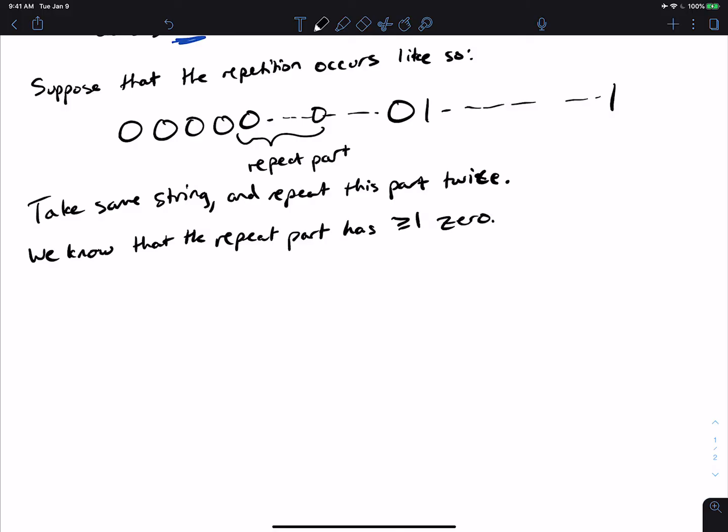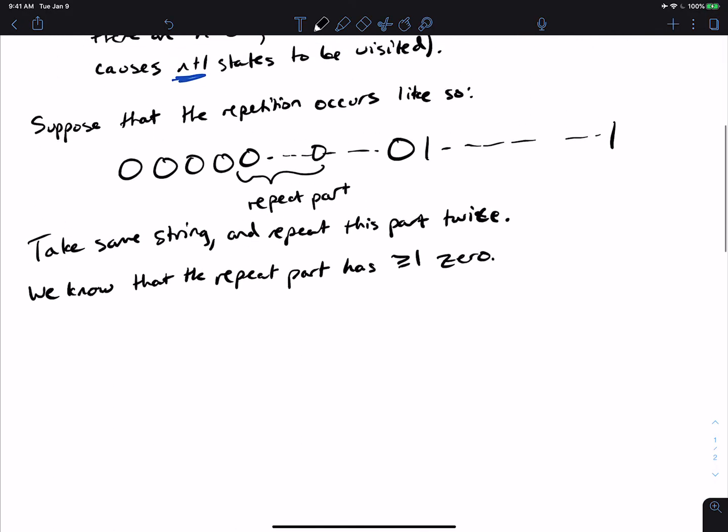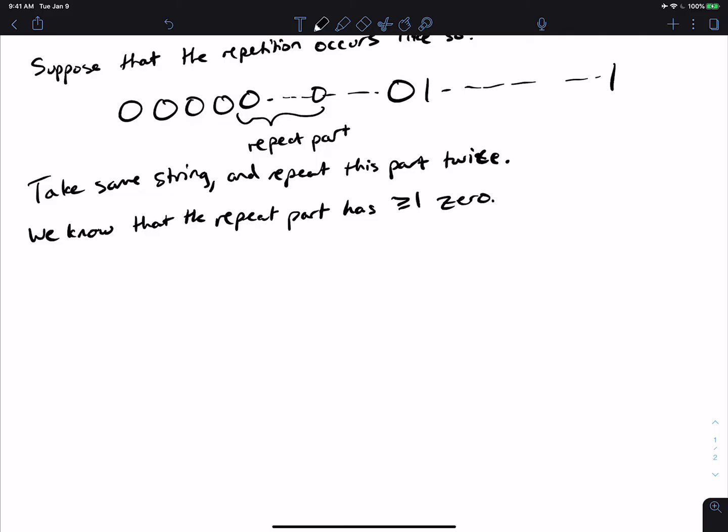Then that means that we know that the repeat part has at least one zero. Because if it was empty, then that would correspond to an epsilon transition, which does not exist in a DFA, which we assumed exists. So, that means there is at least one zero.